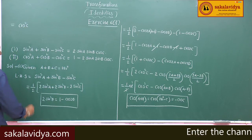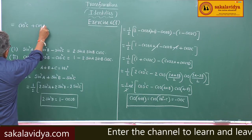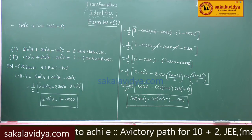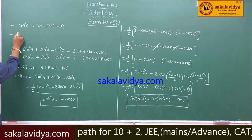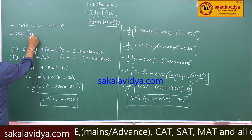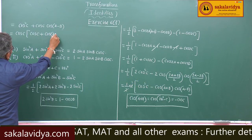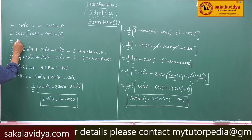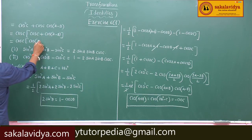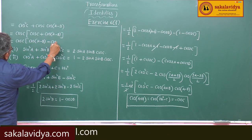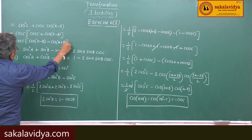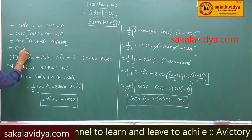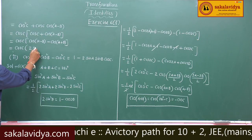So this becomes cos²c minus cos(a plus b) times cos(a minus b), that is minus into minus plus cos c times cos(a minus b). Taking cos c as common: cos c times (cos c plus cos(a minus b)). Replacing cos c with minus cos(a plus b): cos c times (cos(a minus b) minus cos(a plus b)), which equals cos c times 2 sin a sin b.